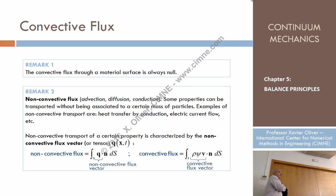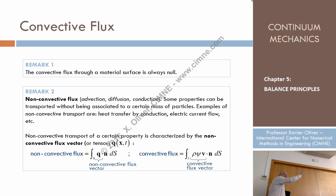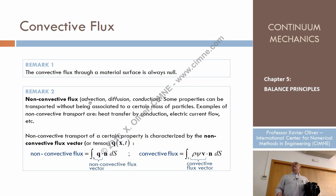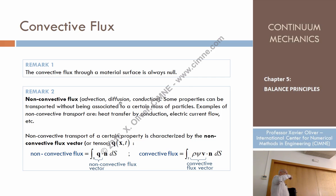Properties can also move in ways different from convection — this is called non-convective transport. If I am at rest, I can still send properties to another particle by other mechanisms. This non-convective transport goes by different names depending on context: in some physics, it's called advection; sometimes diffusion — for example, salt placed in a fluid at rest spreads throughout the domain without any fluid motion.